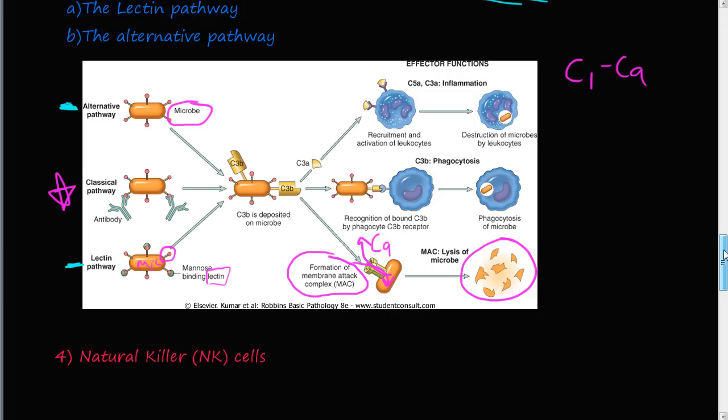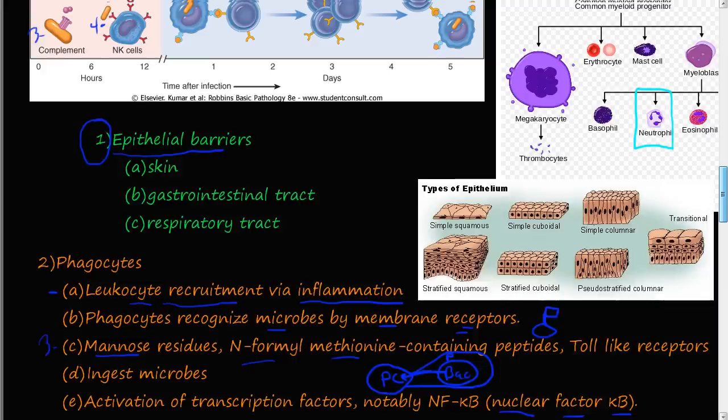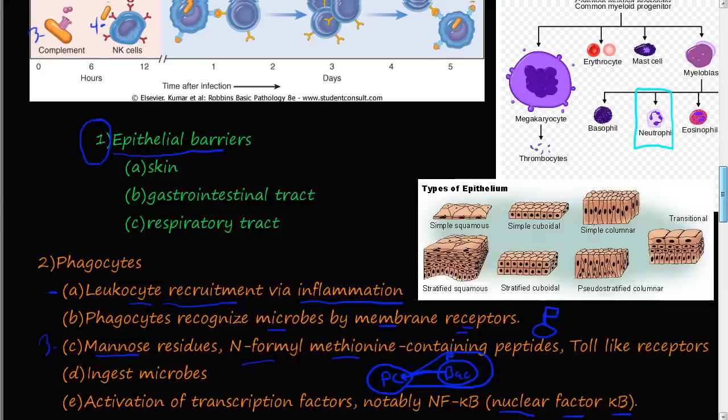Last but not least, the fourth part of innate immunity is the natural killer cells. I'm going to make a special video on natural killer cells to talk in more depth about how they destroy microbes and pathogens. We'll see you in the next video.